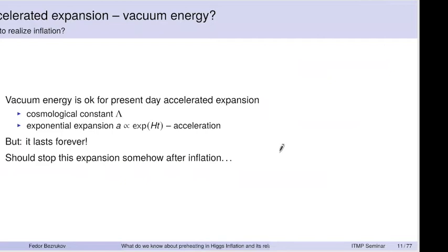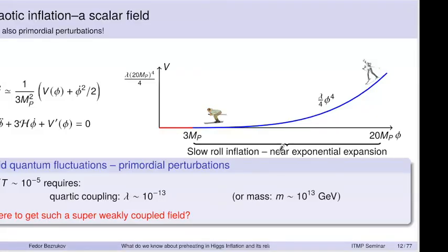Unfortunately, if you just add vacuum energy to the system, this expansion will last forever — everything else will dilute, decay, and the cosmological constant remains. This is not what we observe, because somehow we had a period of normal hot universe, so inflation should stop. What was suggested is to make the cosmological constant change with time and disappear after a period. How it's realized: you add some scalar field to the model.